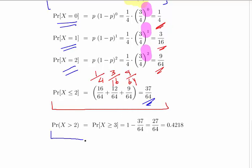What we're asked for is the probability of X greater than 2, which is the probability of X greater than or equal to 3, which is the complement of what we have above: 27 over 64, or 0.4218, which is 42.18%.